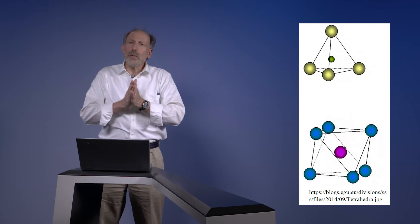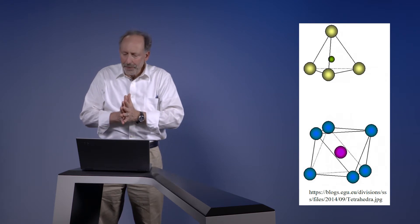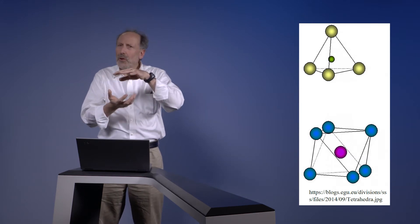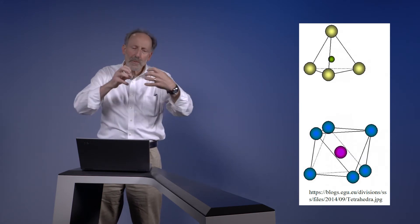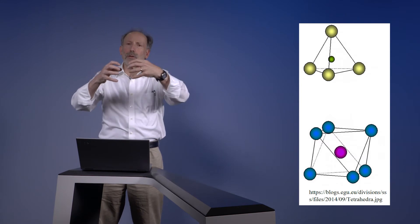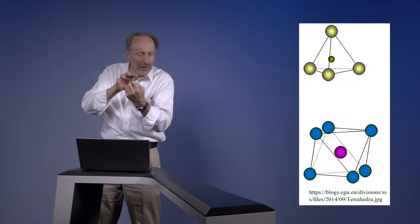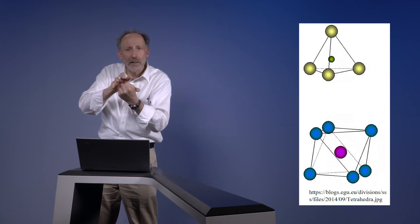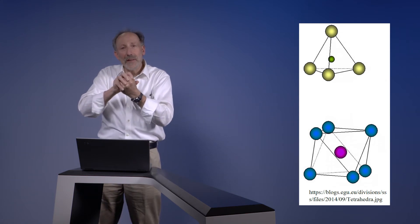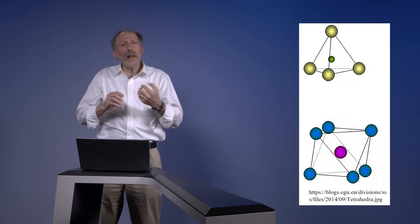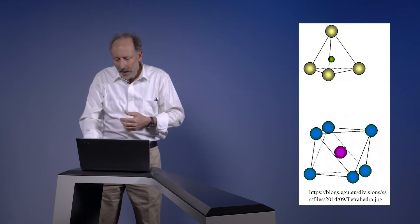And the key thing to observe here is the size of the volume created by those oxygens. So the oxygens basically buffer out a certain geometry, they have a certain fundamental radius, and that creates an interior cavity that's about 41% the size of an oxygen. So it can just fit a silicon in.